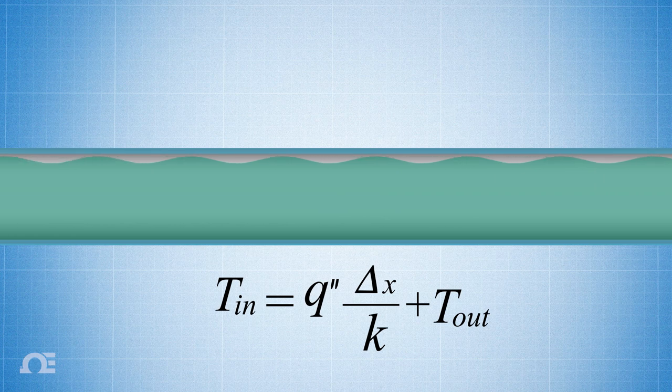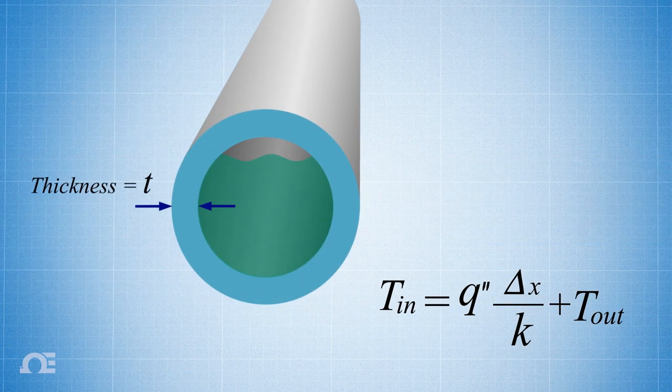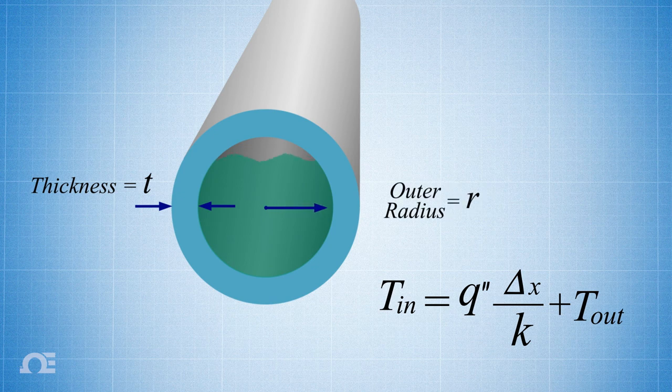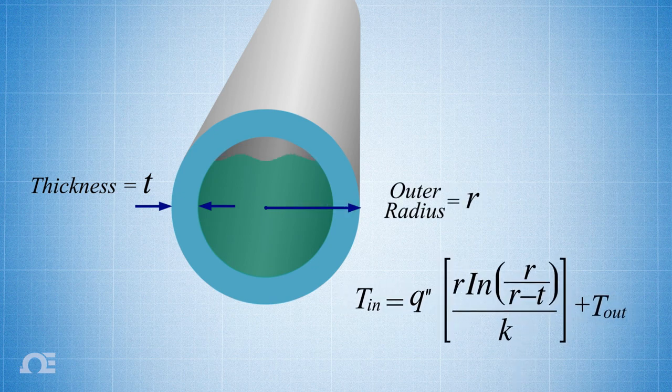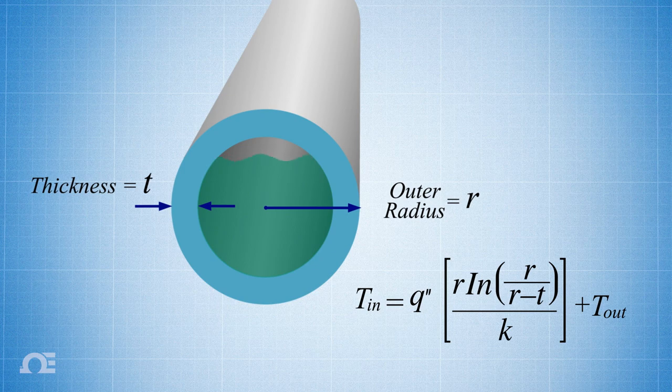Of course, this equation is for one-dimensional heat transfer. For a pipe with thickness T and outer radius R, a shape factor must be applied, which can be substituted into our previous equation for one-dimensional heat transfer.